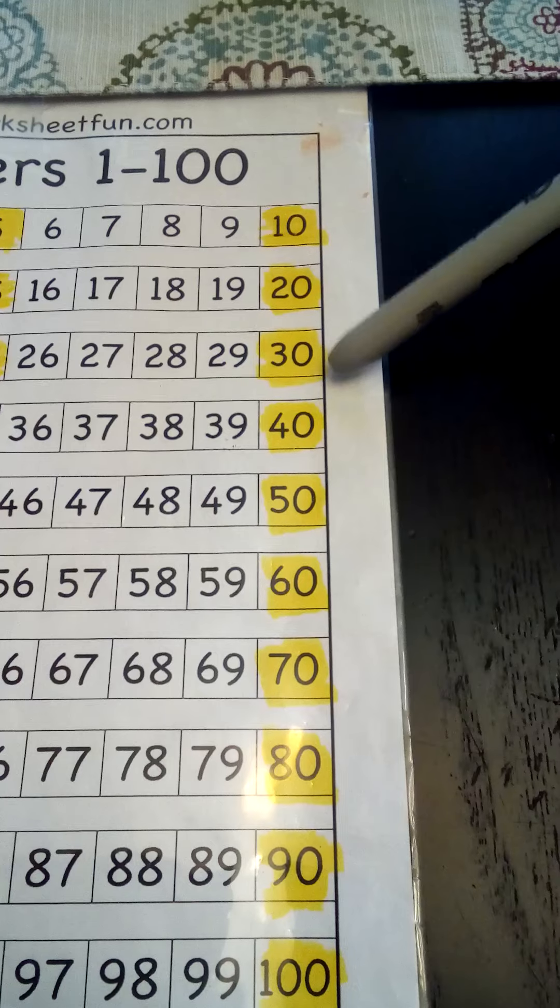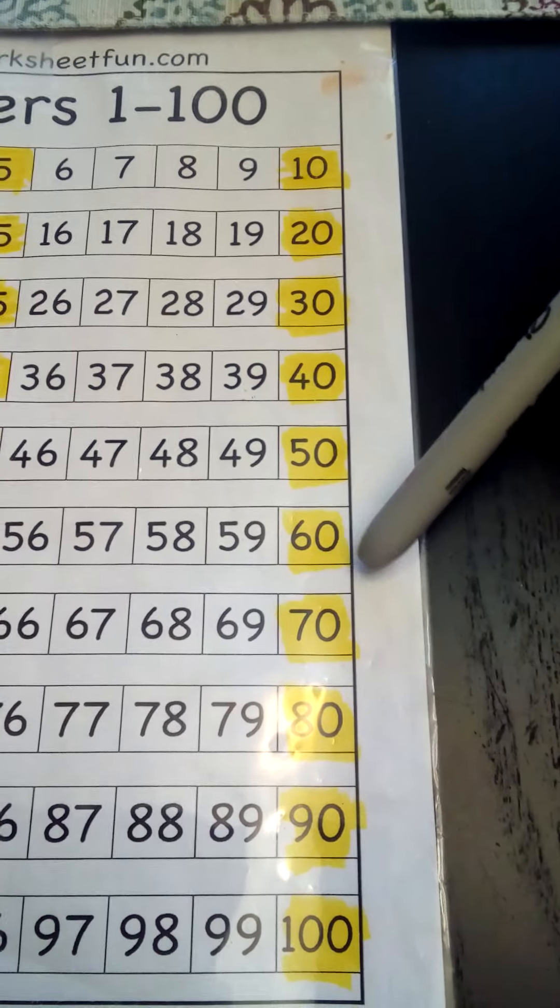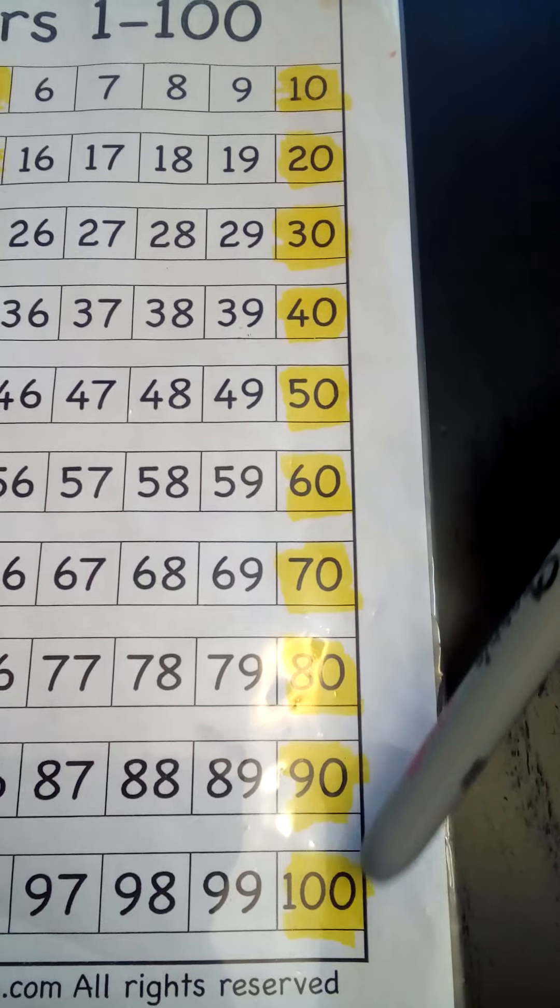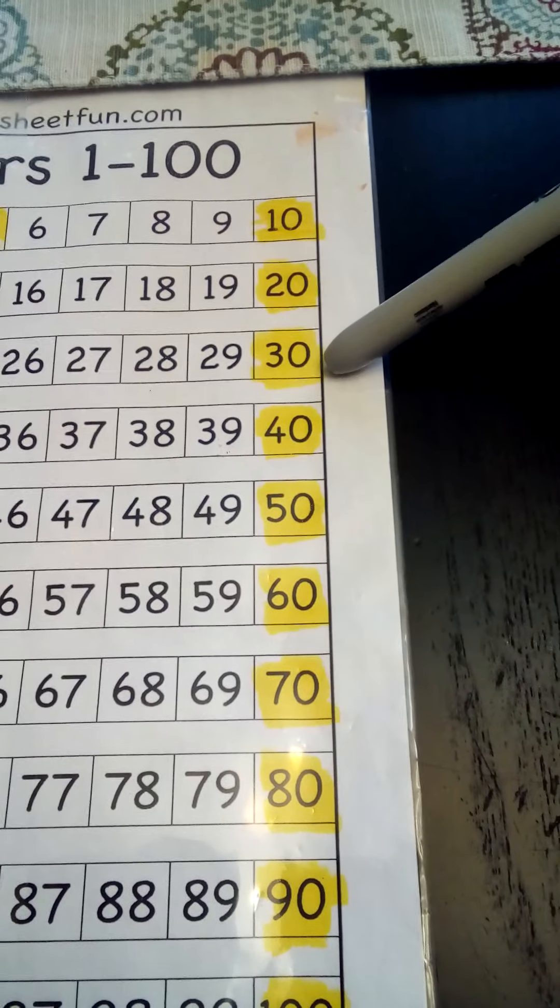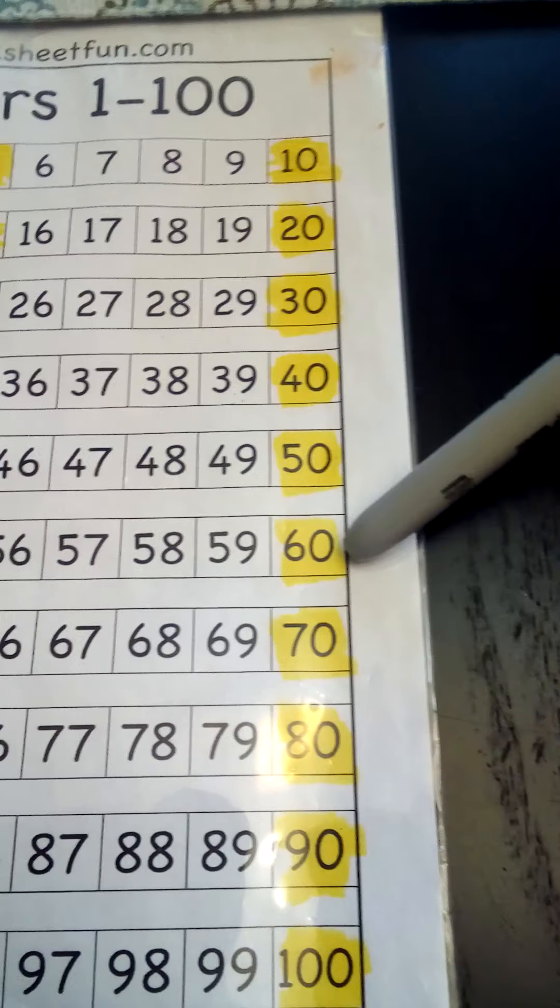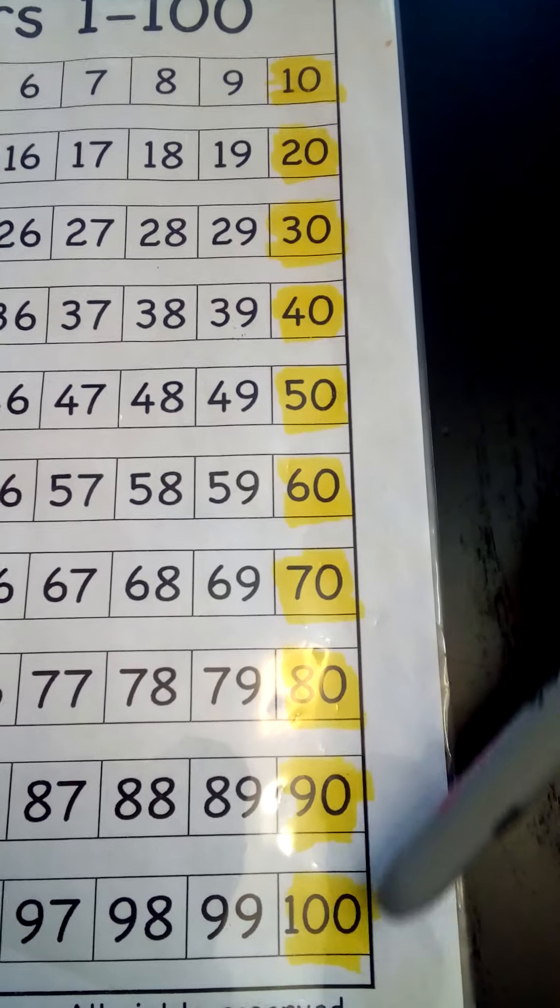10, 20, 30, 40, 50, 60, 70, 80, 90, 100. Let's go a little faster. 10, 20, 30, 40, 50, 60, 70, 80, 90, 100.